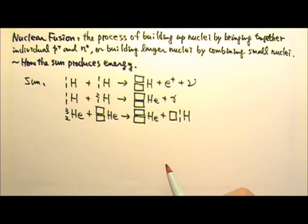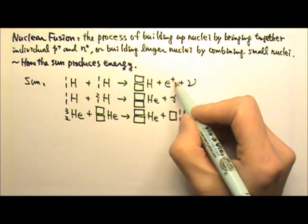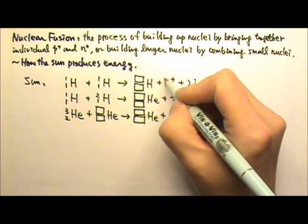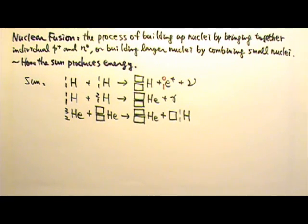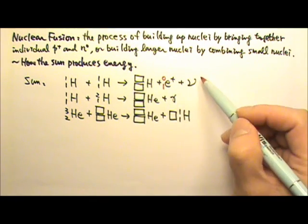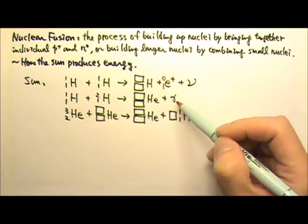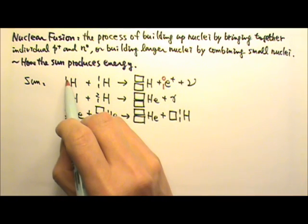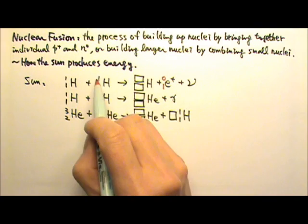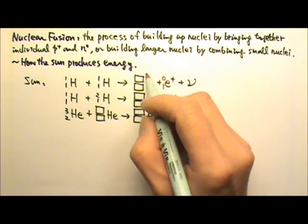To help us balance the equation, we can put in numbers for the positron. The positron is 0, 1. We do not have to put in numbers for the neutrino or the gamma ray because they do not affect the balance of the equations. So over here we have on the top 1 plus 1, and this must be 2 plus 0.